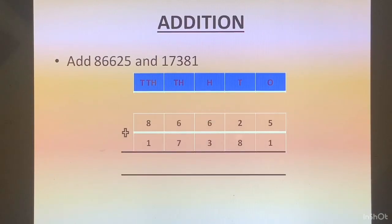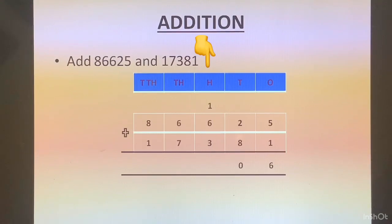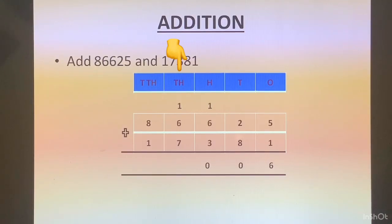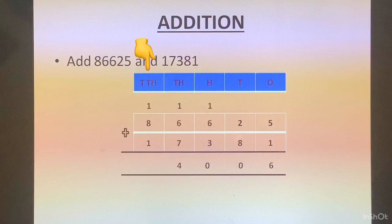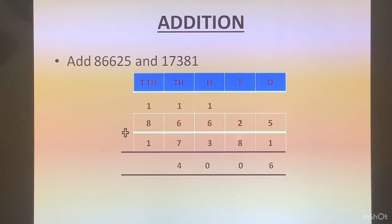5 plus 1 gives us 6 in the ones column. Then 8 plus 2 gives us 10, so we write 0 in the tens column and carry 1 to the hundreds column. Then 6 plus 3 is 9, plus 1 carry is 10, so we write 0 in the hundreds column and carry 1 to the thousands column. Then 6 plus 7 is 13, plus 1 carry is 14, so 4 goes in the thousands column and 1 is carried. Then 8 plus 1 is 9, and 9 plus 1 carry is 10. Since there is no number after this, both digits 1 and 0 come at the bottom. So the answer is 104006.